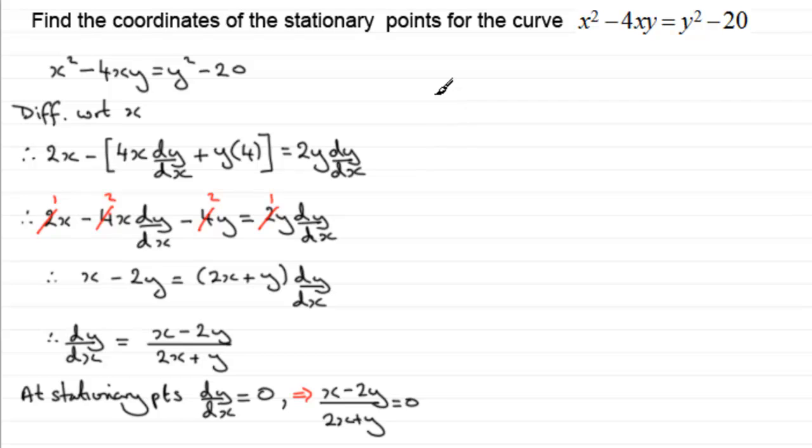So that means obviously that x minus 2y over 2x plus y must equal 0. Now, when you've got a fraction that equals 0, if I multiply both sides by 2x plus y, then I'm going to be left with x minus 2y equals 0. So the top of the fraction must be 0. Therefore we have that x minus 2y equals 0. And clearly it follows from here that if we make x the subject, that x will equal 2y.